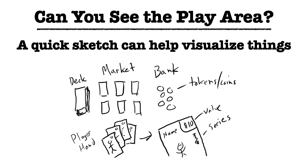So in this case, I just made a really quick sketch — this is not my finest work. It shows this game will have a deck of cards, a marketplace consisting of about six cards, a bank of tokens or coins, and each player will have a hand of four cards. I zoom in a bit to show some of the information that might be on a card. It's just enough to visualize the area this game might take up, what's in front of people, and provide sort of a checklist of components.